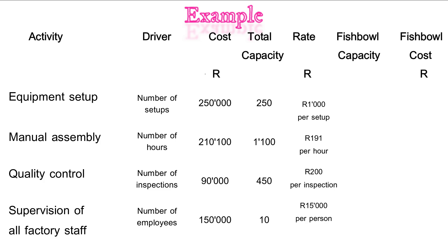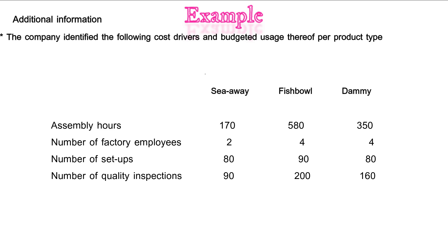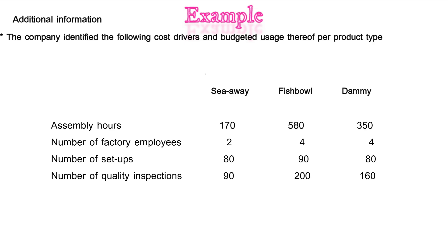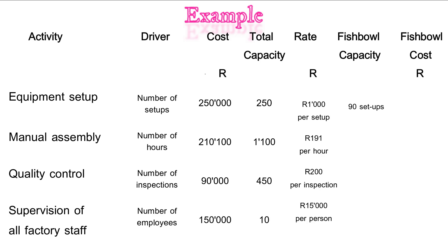The next column is Fishbowl capacity. From the additional information, Fishbowl's capacities are: assembly hours — 580 hours, number of factory employees — 4, number of setups — 90 and number of quality inspections — 200. So under Fishbowl capacity we put 90 setups, 580 hours, 200 inspections and 4 people.